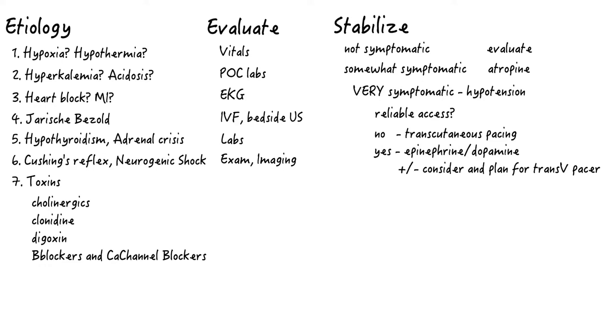ACLS recommends epi drip or dopamine drip for chemical pacing. I personally favor push dose epi over drips in the acutely unstable patients. Drips take a while to set up, time to titrate to effect, and occupy a line. Precious real estate in the unstable patient.